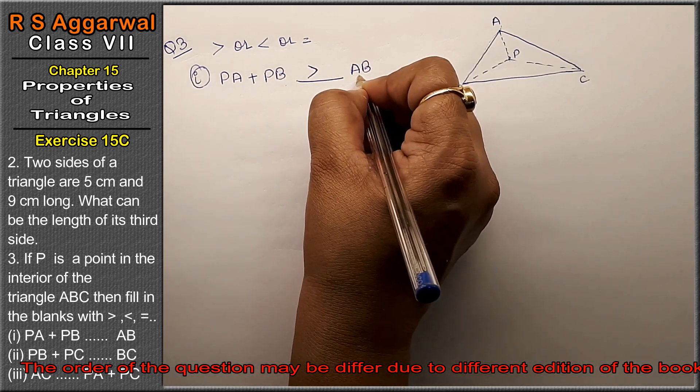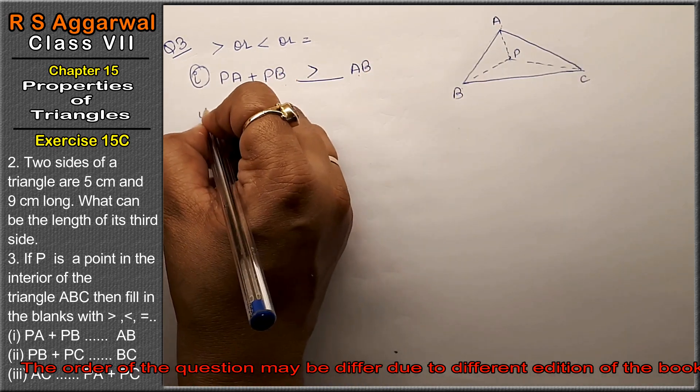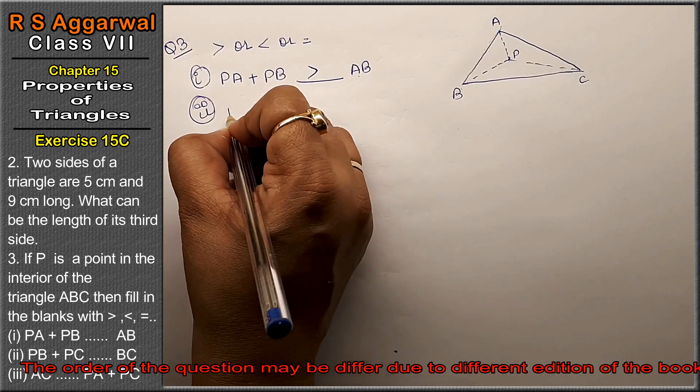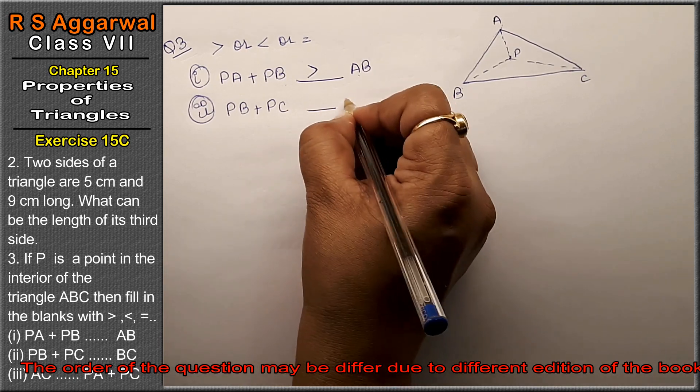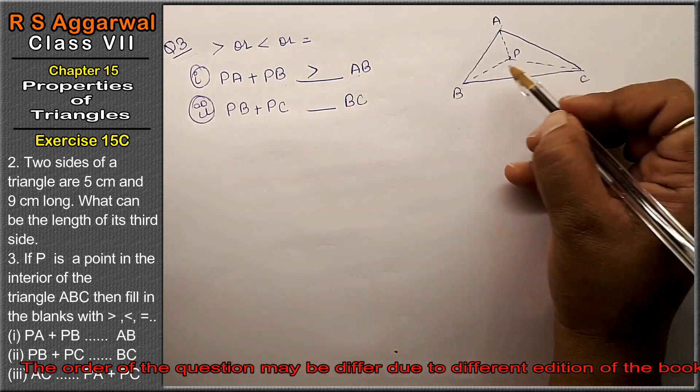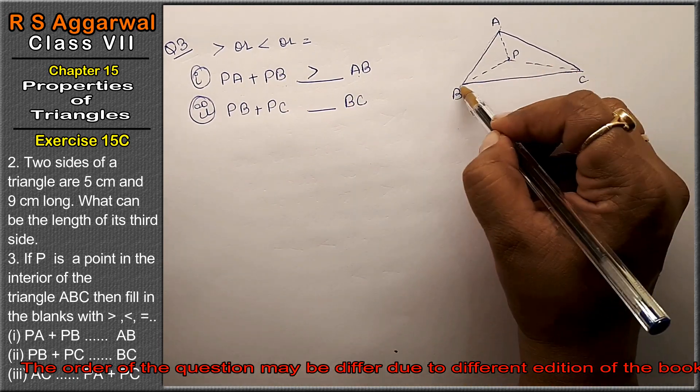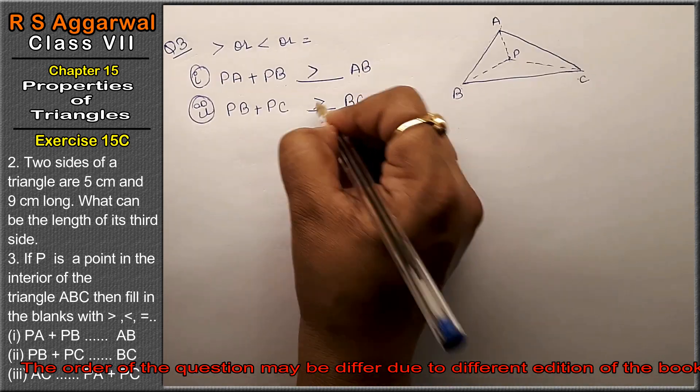Second part: PB plus PC dash dash dash BC. The answer is PB plus PC is greater than BC.